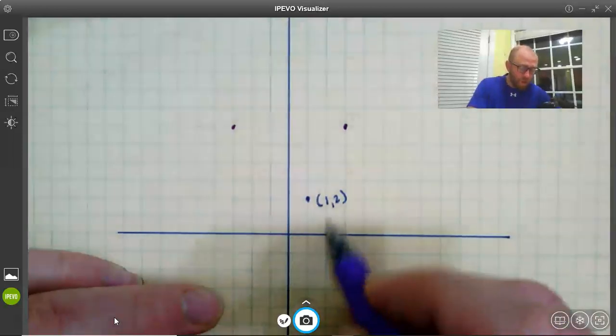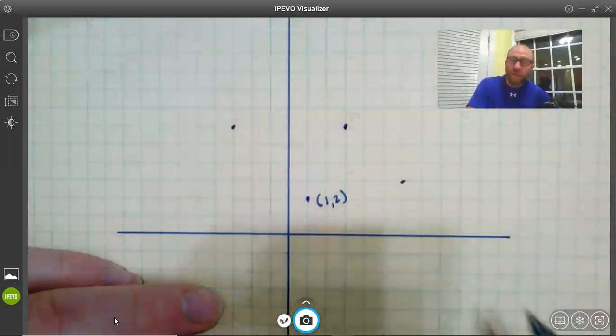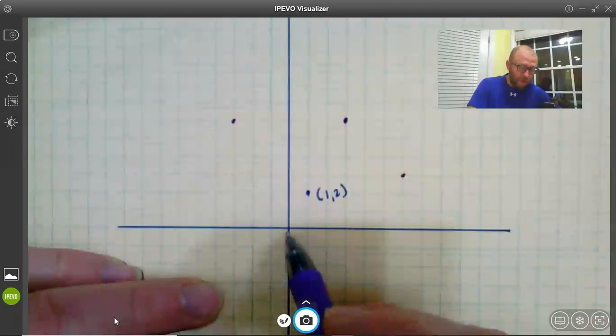I could go over 2, up 1, over 2, up 1, over 2, up 1 - that point would be there. Or I could go down 1, over 2, down 1, over 2, down 1, over 2.